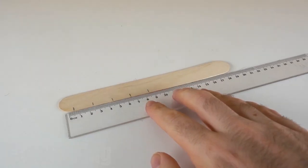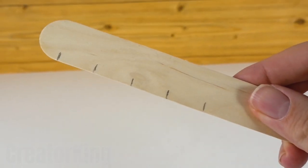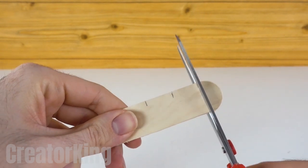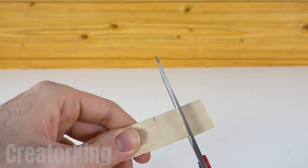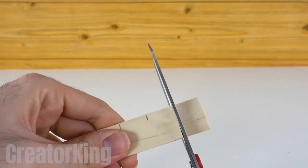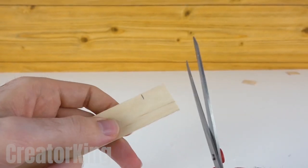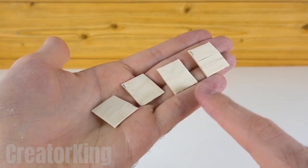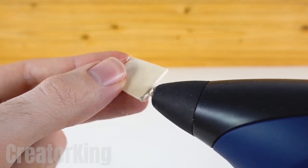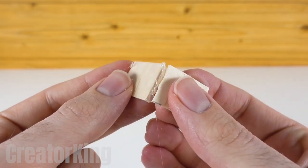With scissors, cut along the marks on the stick. Be careful with the pieces that fly away. When we have the four pieces ready, glue them together with hot glue to form a perfect wooden square.